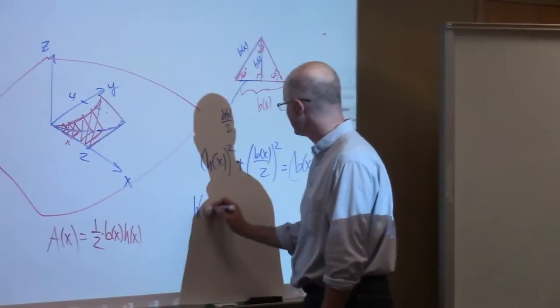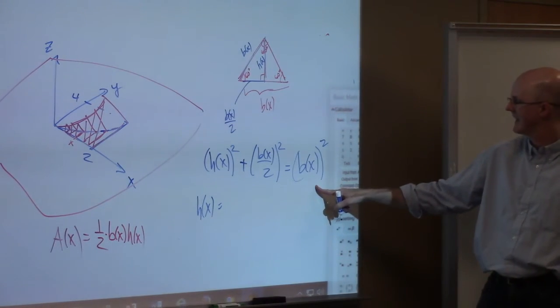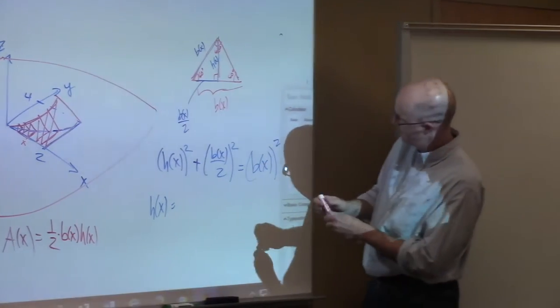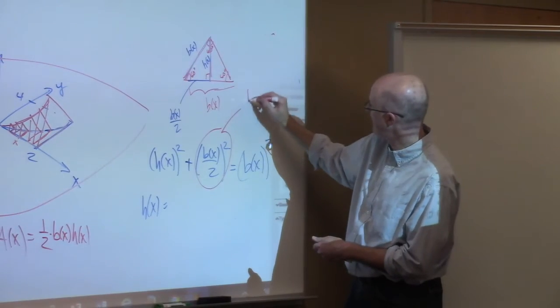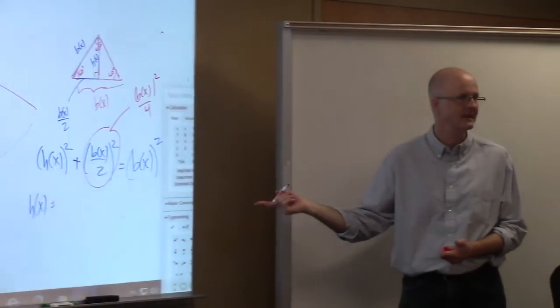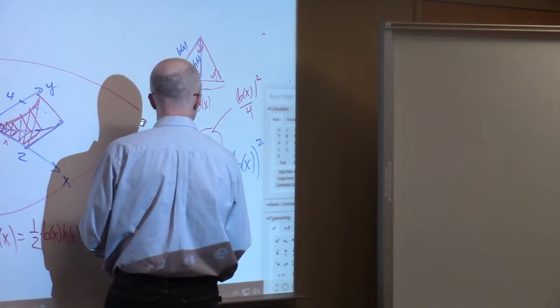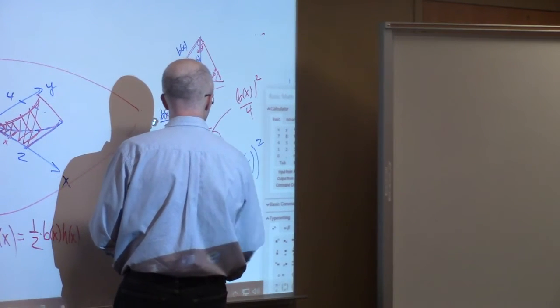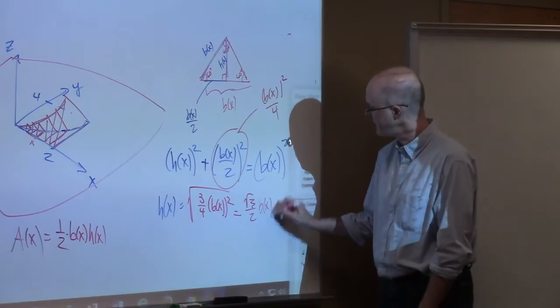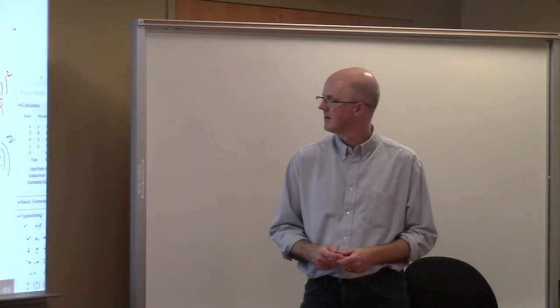H of x must be the square root of, subtract this from both sides. This is really b of x squared divided by 4. So, when I subtract that from both sides, I get a 3 fourths on the right side. It's going to be the square root of 3 fourths b of x squared. Square root of 3 over 2. That seems familiar. Times b of x, which is a positive quantity, so I don't need absolute value signs. That's the height.